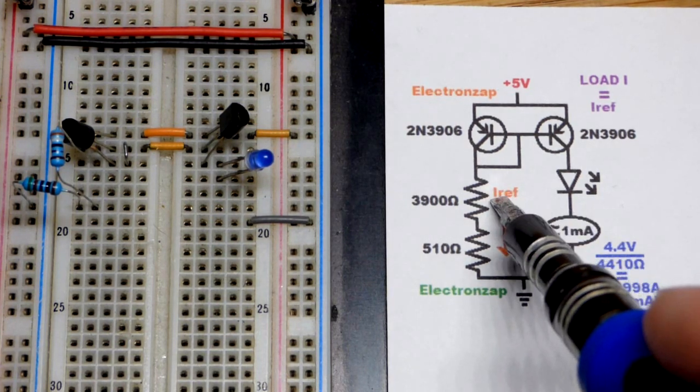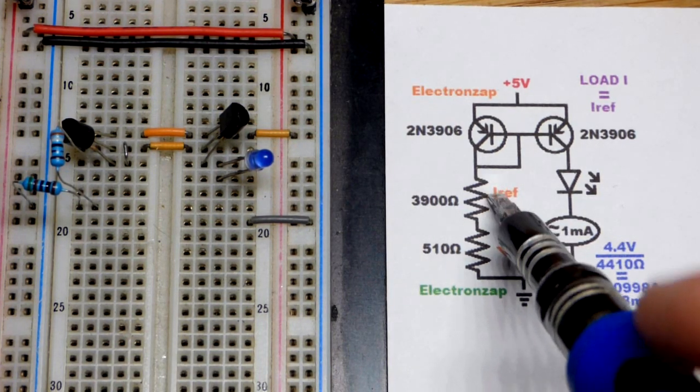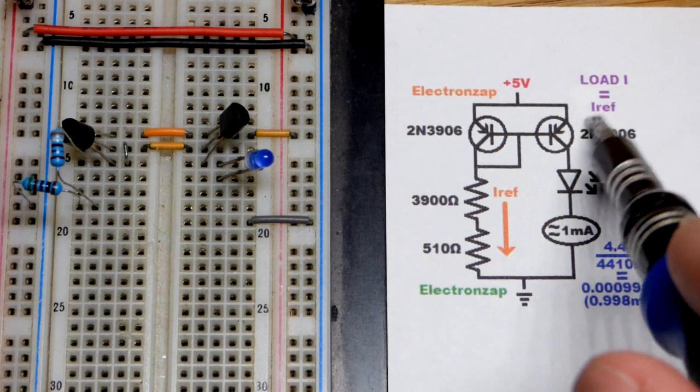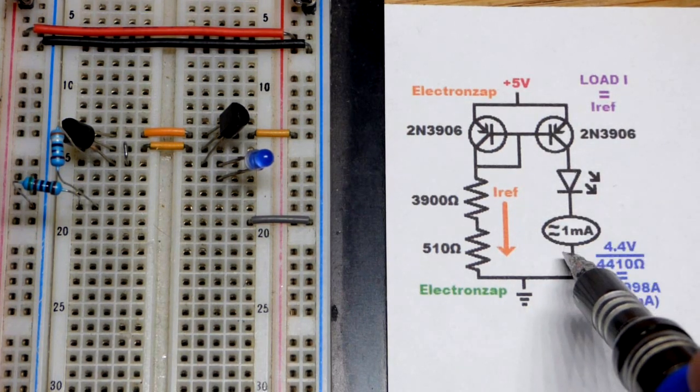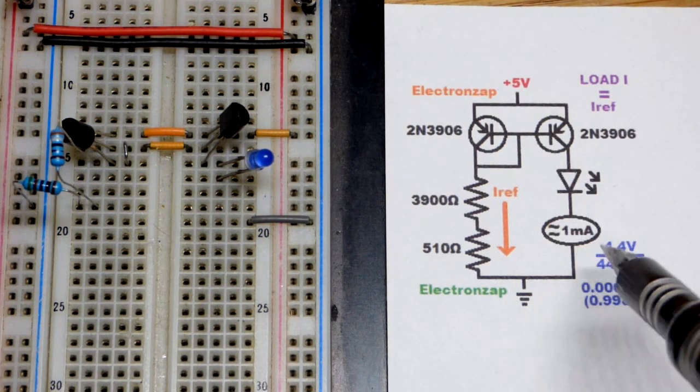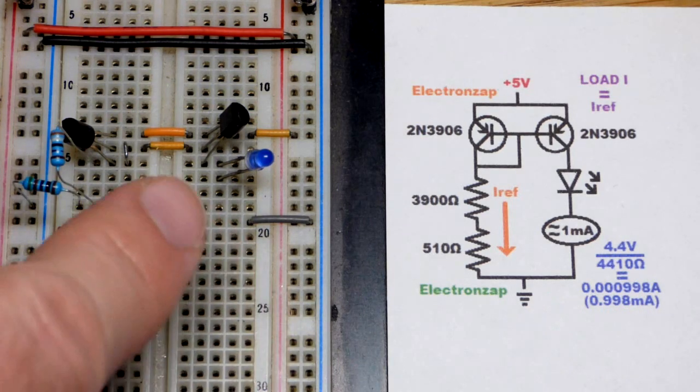So that's I reference. I is current in electronics. So the load current is equal to that reference current, as we will see. As I said before, it's going to be about one milliamp of current.